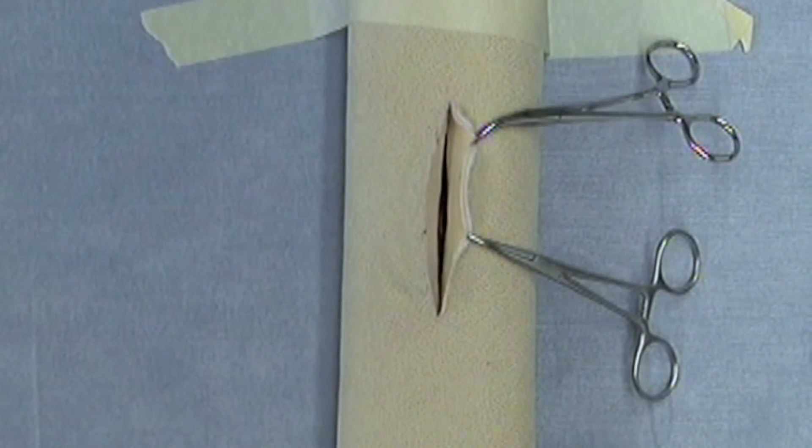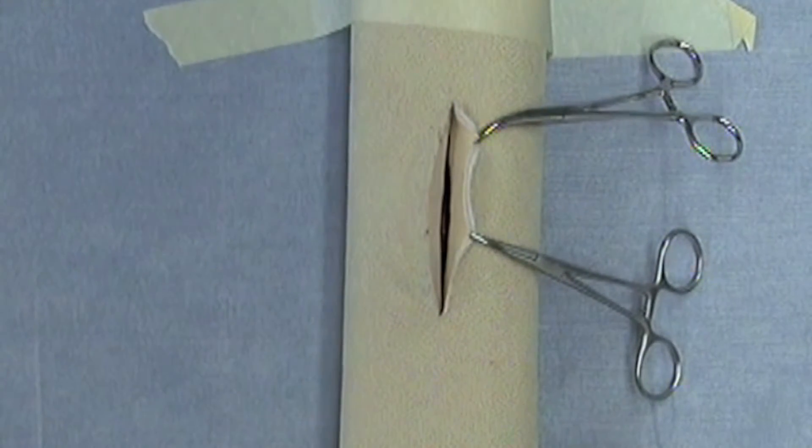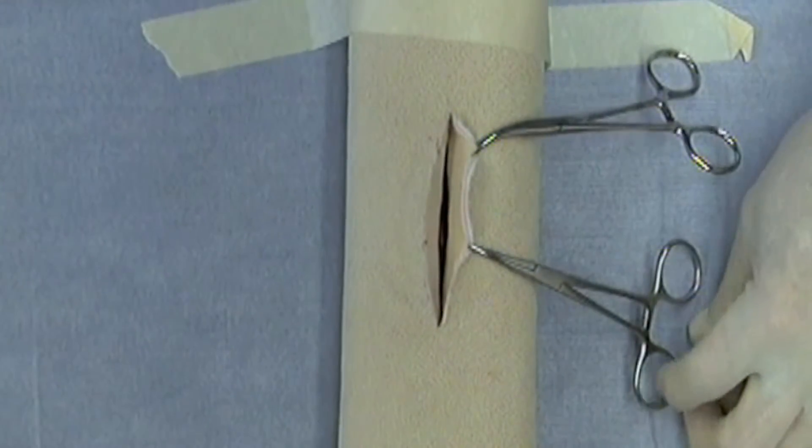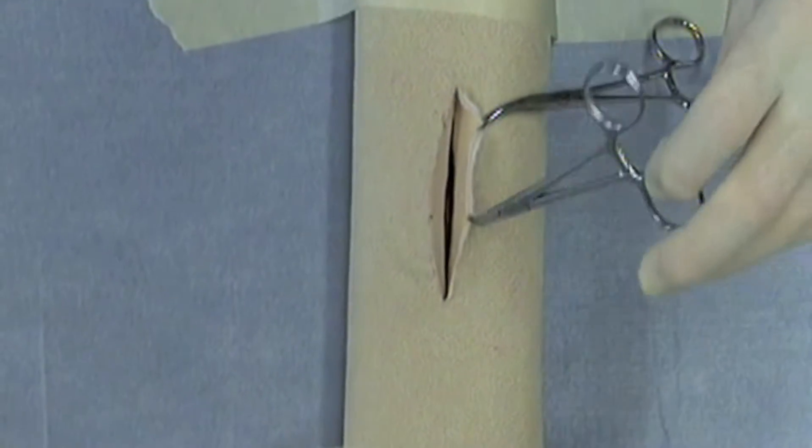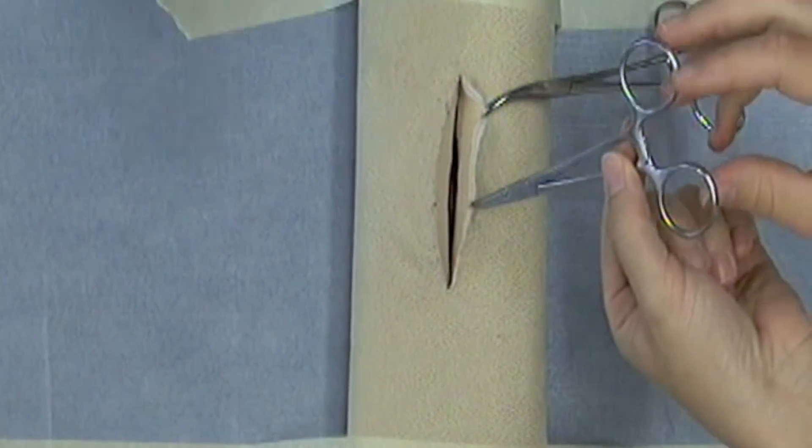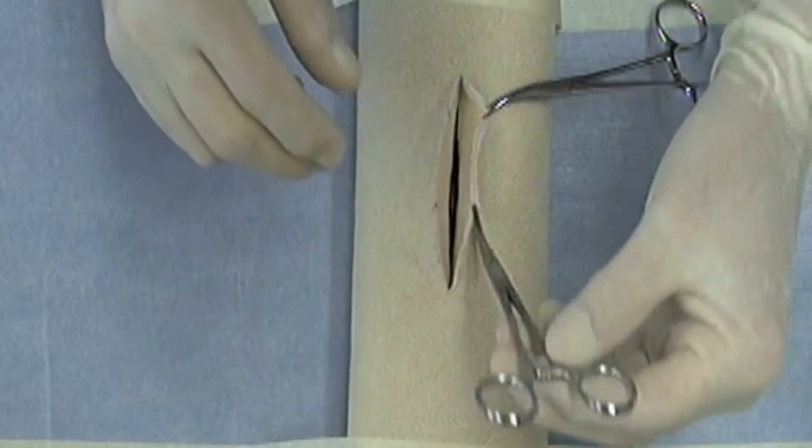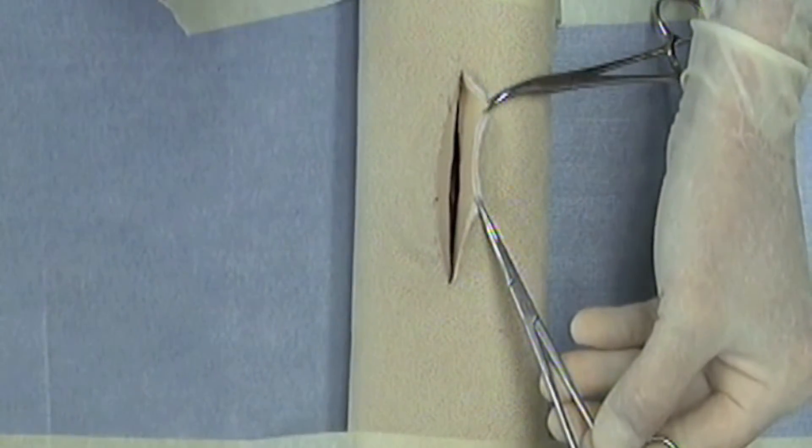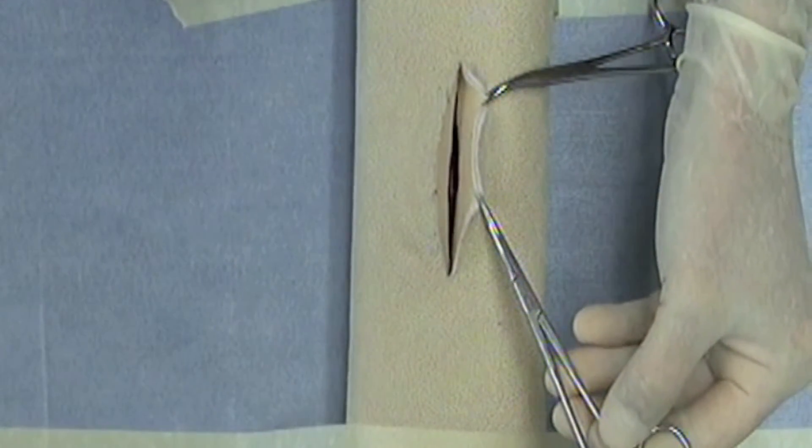Now to do this properly certainly requires an assistant surgeon and so I will have my trusty assistant come and help. One of the reasons that I applied the Kelly forceps in that manner is that when you tie around a hemostatic forceps, you need to have the tips of the instrument presented to the surgeon.